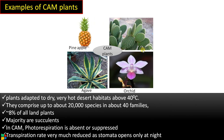Examples of CAM plants include pineapple, agave, cacti, and orchids — all plants adapted to live in hot, dry desert environments. Approximately 8% of all land plants are CAM plants, and the majority are succulents. The advantage of CAM plants is that photorespiration is very much minimized or suppressed, and the transpiration rate is greatly reduced as stomata open only at nighttime.